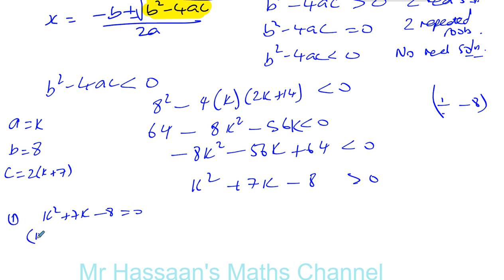This factorizes. You see you're going to have 1 is positive, 1 is negative. You see it's going to be 8 and minus 1. So k plus 8 is 0, so k is negative 8. And k minus 1 is 0, so k is positive 1.